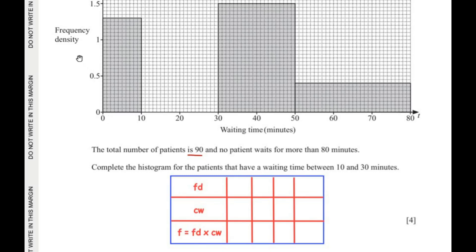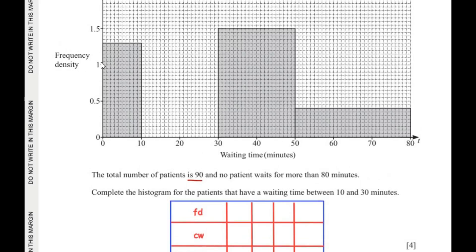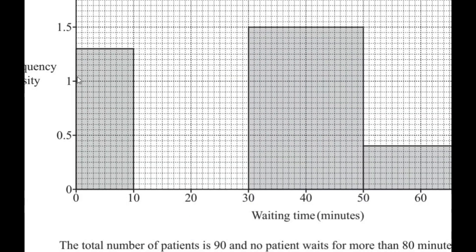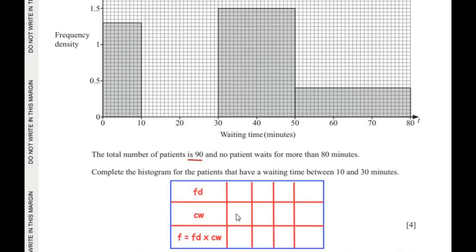For the first class interval, 0 to 10, each division on the y-axis is 0.05 units, so reading the bar height gives a frequency density of 1.3. The class width is 10 minus 0 = 10. So the frequency is 1.3 × 10 = 13 patients.